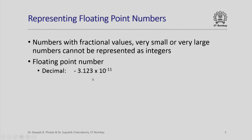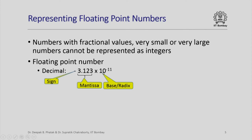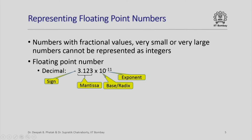Let us look at the floating point number minus 3.123 times 10 raised to -11. This is the floating point in this number. When we look at minus 3.123 times 10 raised to -11, this is written in decimal and in this representation there are several parts. The first is the sign, which is negative. Then we have 3.123, which is also called the mantissa. Then we have the base, which is 10, and finally we have the exponent, which is -11. There is nothing sacrosanct about representing floating point numbers in decimal notation — we could also use binary notation where the mantissa and exponent would be binary representations and the base would be 2.